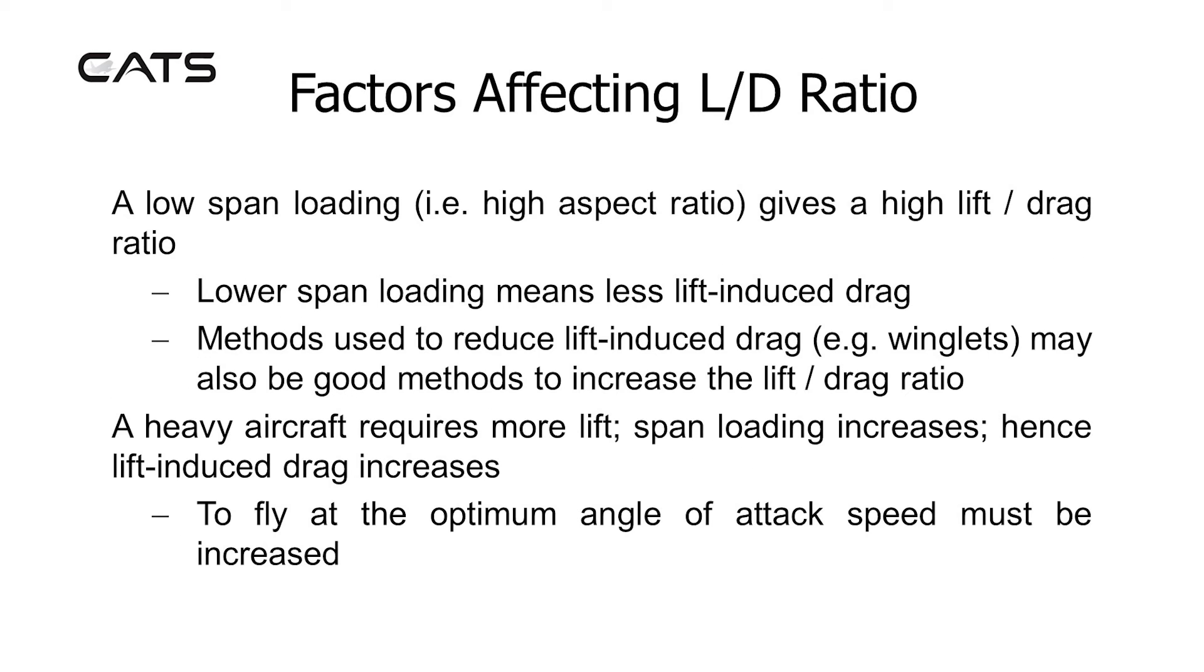A low span loading, i.e., higher aspect ratio, gives a high lift to drag ratio. Lower span loading means less lift-induced drag. Methods used to reduce lift-induced drag, for example winglets, may also be good methods to increase the lift to drag ratio.